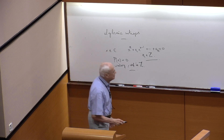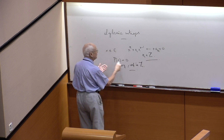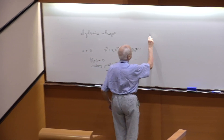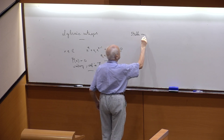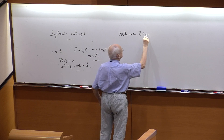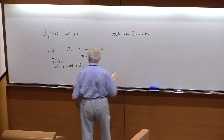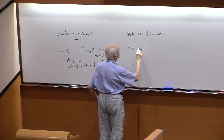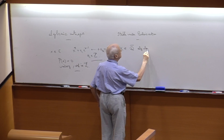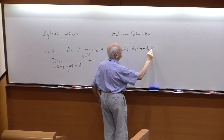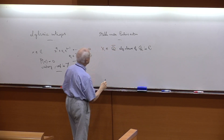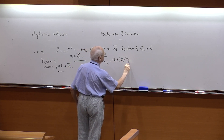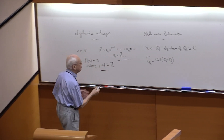I will be interested in packages of solutions of such an equation — that means in practice a set or multi-set of algebraic integers which is stable under Galois action. These elements are not only in C but in the algebraic closure of Q in C, and on that you have an action of the Galois group Γ_Q = Gal(Q̄/Q). We are interested in subsets which are stable by Γ_Q.